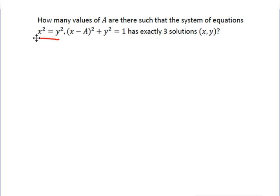What I noticed when I looked at that was the only way you can have three solutions is if 0, 0 is one of your solutions. Because if 1, 1 was one of your solutions, then 1, negative 1 would also have to be a solution — you get these pairs. Every pair is going to create two solutions, so the only way to have an odd number like three is if you include 0, 0. So that's one way to look at it.